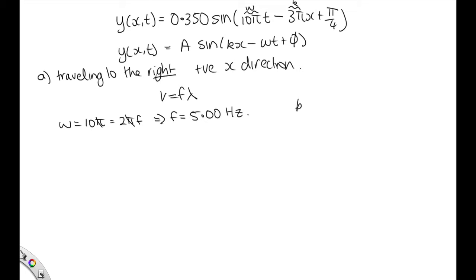And we know that k equals 2π over lambda by definition, and that's equal to this 3π. So that tells us that lambda is equal to 2 over 3, which if you want to solve it on the calculator, you get 0.667 meters for it, or you can leave it as 2 thirds of a meter.